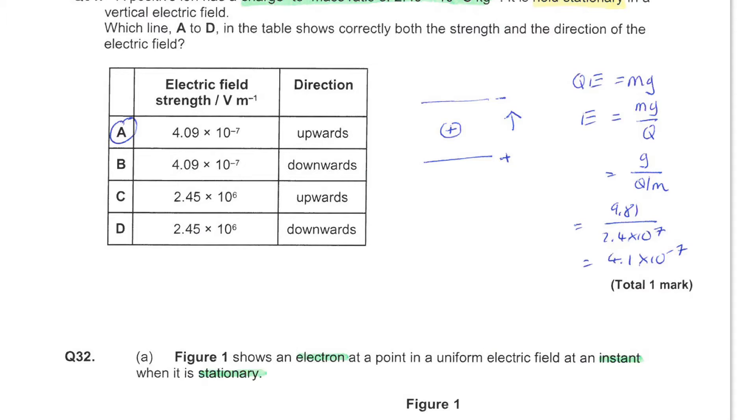We can rearrange the equation and divide both the top and the bottom by m, leading to the gravitational field strength divided by the charge-to-mass ratio. This leads us to an answer consistent with the value for A.